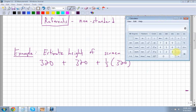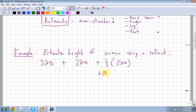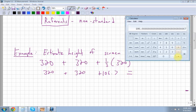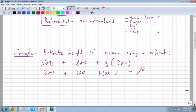So one-third of 320. I can use my calculator and say, what's a third of 320? Divided by 3, I get 106.7. So I add all these values together: 320 plus 320 plus 106.7, and I get 746.7.